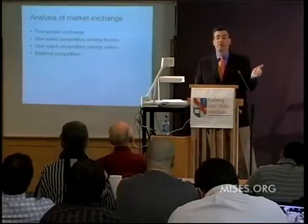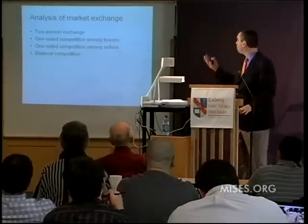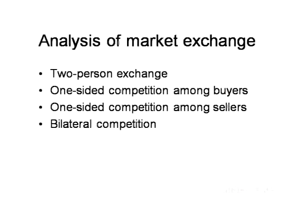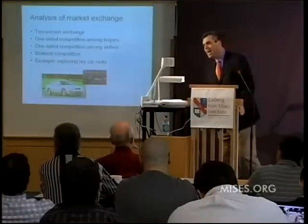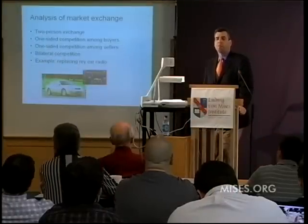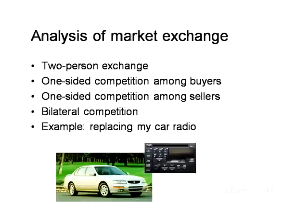Here's what we're going to do. We'll walk through a series of different scenarios from the most simple to the most complicated. We'll start with a simple case of two-person exchange, then go on to a setting where you have many potential buyers of one single commodity — think of an auction or an art market. Then we'll think about a situation with one buyer and multiple sellers, working our way up to bilateral competition with multiple buyers and multiple sellers. I'm thinking about this with a specific example: my car radio — more specifically the CD player on my old Nissan Maxima.